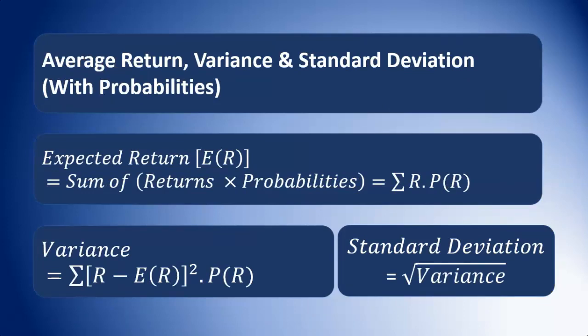With probabilities, things are a little bit different. We calculate the expected return, which is the sum of each return times its probability — multiply each return by its probability and sum to get the expected return. For the variance, we still find the squared deviation from the mean, where the mean is the expected return. We subtract the expected return from each return, square the results, then multiply each of those squared deviations by the probability. Once we've totaled those, we have our variance. And as usual, the standard deviation is just the square root of the variance.